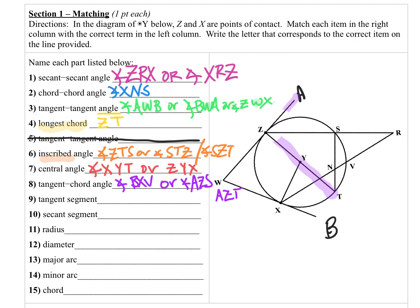A tangent segment starts at the point of tangency and goes out to a point outside the circle. So it could be XB or XW going one direction. Or on the other side, it could be ZA or ZW. Any of those would be fine.